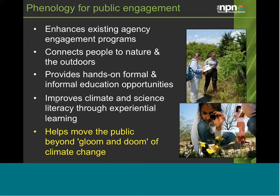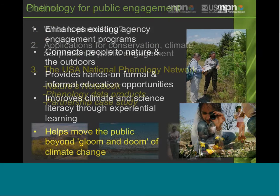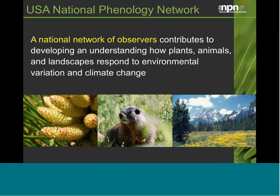Moving to the last section: an overview of the National Phenology Network. Our vision is a national network of observers — both professional and citizen scientists — contributing to understanding how plants, animals, and landscapes respond to environmental variation and climate change. We have a broad spatial distribution of observers across the nation. As of this month, we have over 3.6 million phenological records in our National Phenology Database.